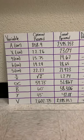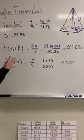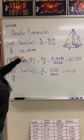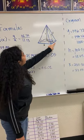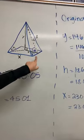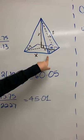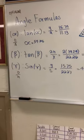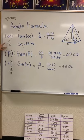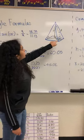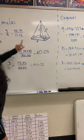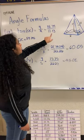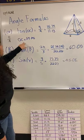Now for the angles alpha, beta, and gamma. Alpha is found between the height of the triangular face and the apothem. To find alpha, we take the tangent of alpha, which is opposite over adjacent — that is, y over the apothem. Plugging in our values, we got alpha = 54.75 degrees.